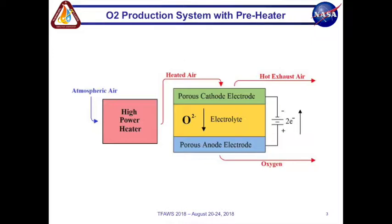Depending on the system, operational temperature can be 500 to 800 degrees Celsius. Now the heated air goes into the cathode and through a process called electrolysis, O2 is diffused through a membrane and is released through the anode.